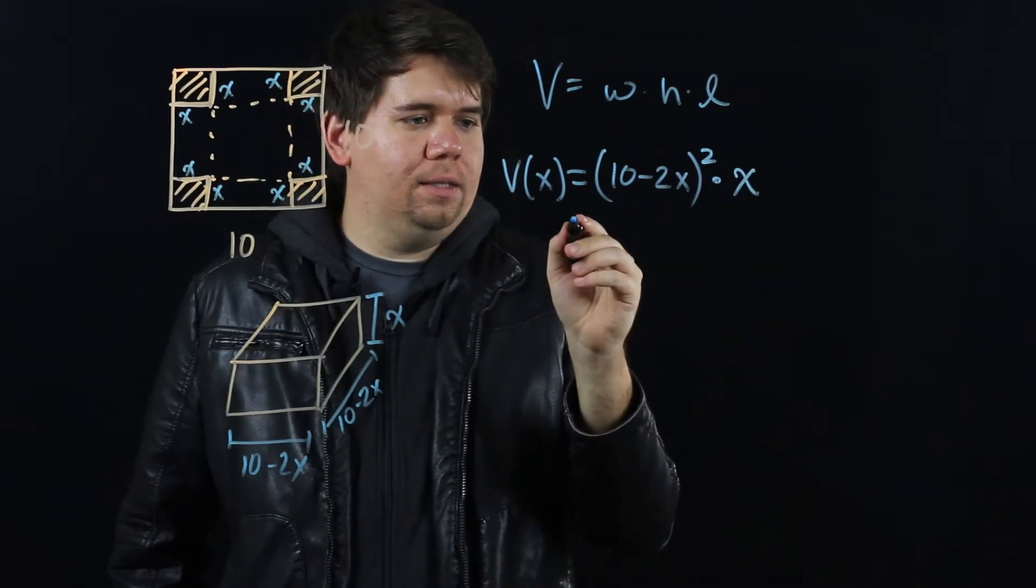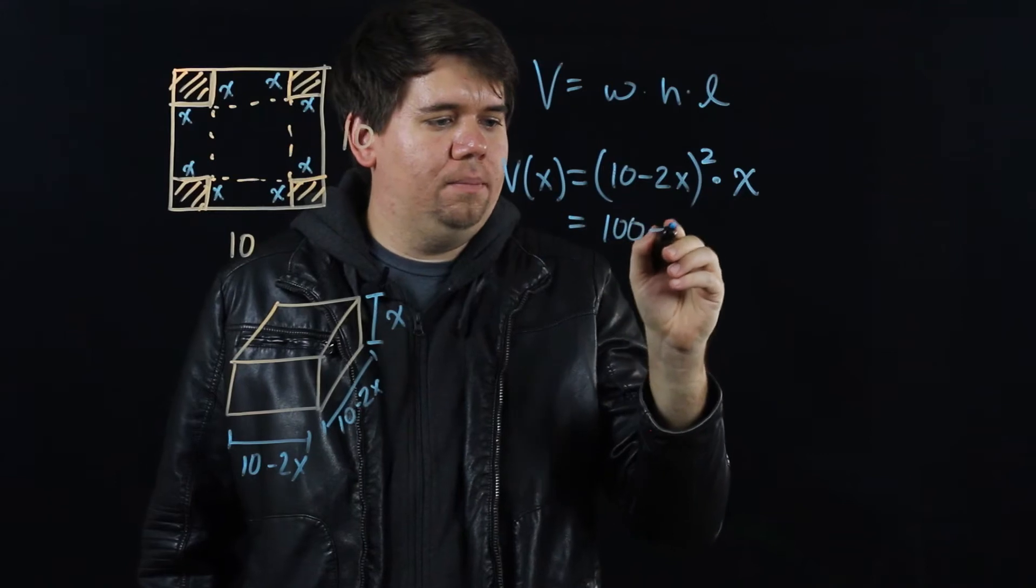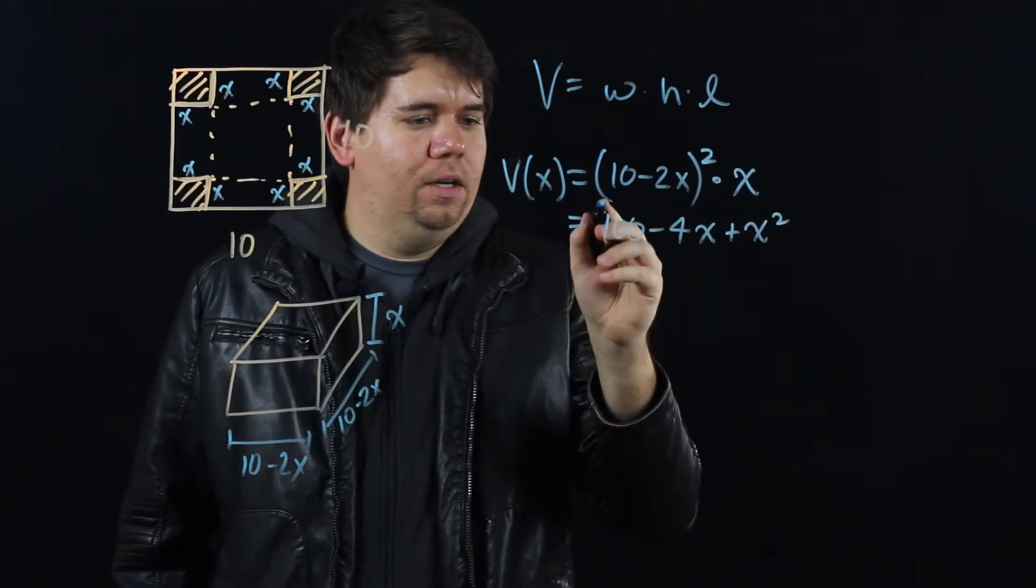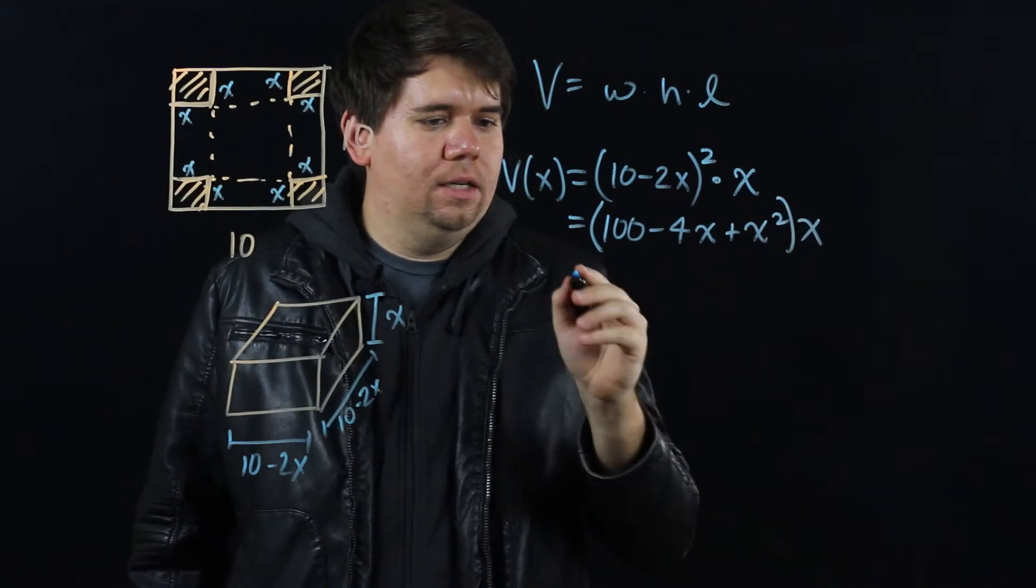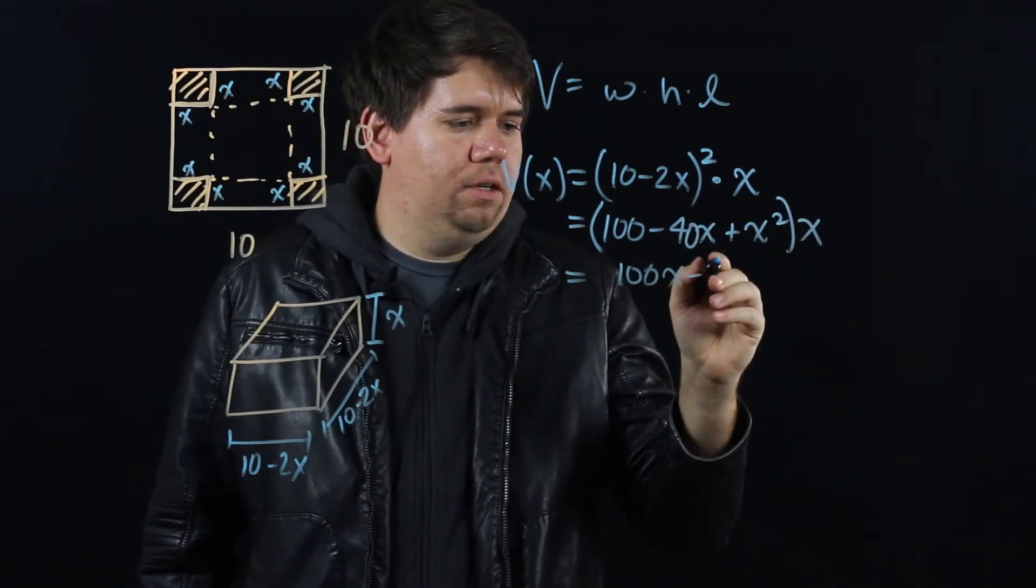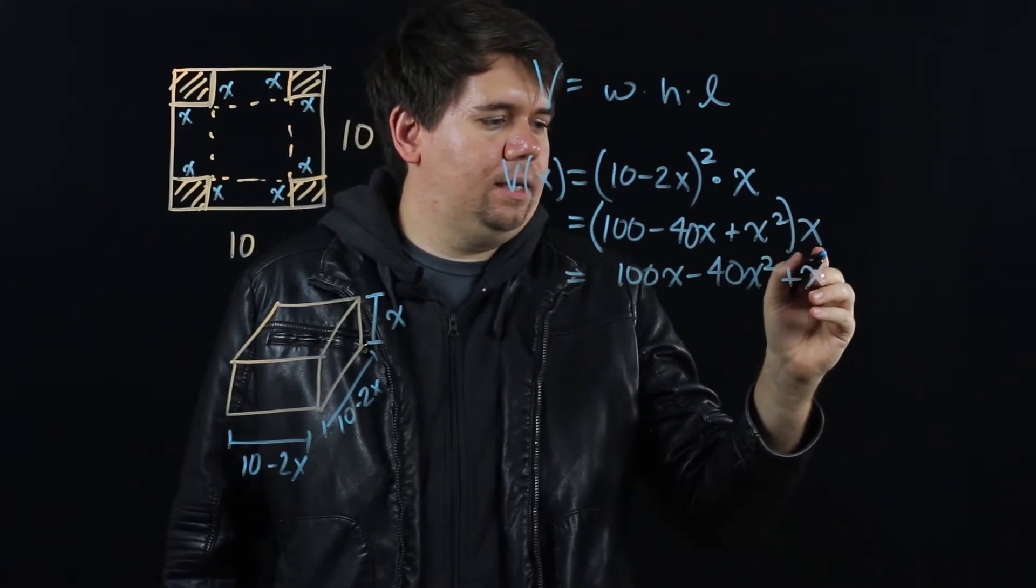If we want to multiply this out, we get (10 minus 2x) squared is 100 minus 40x plus x squared all times x. So our volume is just 100x minus 40x squared plus x cubed.